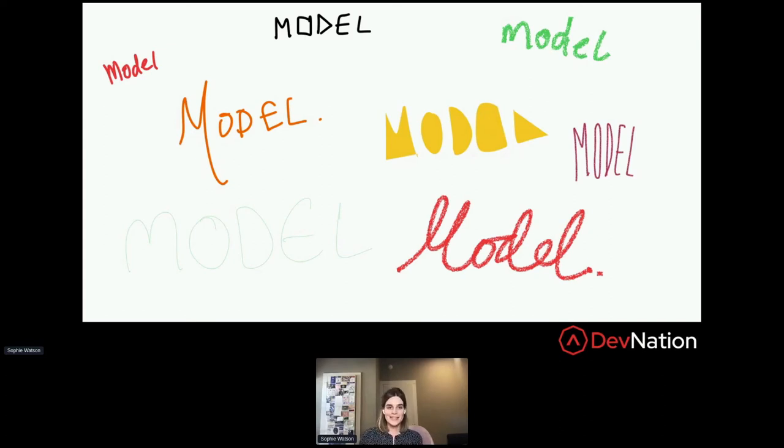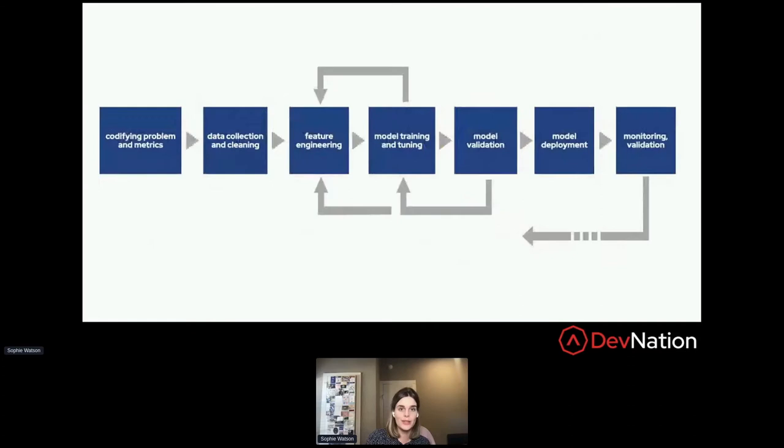In practice, data scientists do much more than just dealing with models. What we're looking at here is the machine learning workflow, so it starts on the left from codifying your problem and metrics - that's essentially stopping and thinking about what's the problem that you want to solve and how are you going to know if you've done a good job of solving it. From there we're on to exploring our data, visualizing the data, collecting it. Maybe it's streaming in from Kafka and we have to aggregate it and integrate that with some static databases we might have and look for patterns in that data.